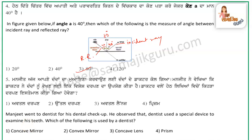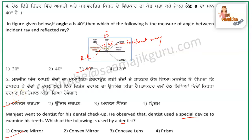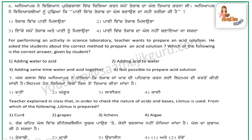Question number 5: Manjit went to a dentist for his dental check-up. The dentist uses a special device to check the teeth. The answer is a concave mirror, because it magnifies the teeth — it will show them bigger — so the teeth will appear clearly in the cavity.